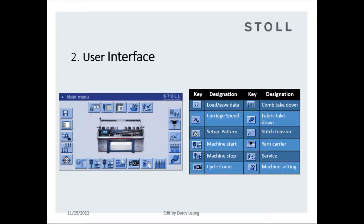Stitch tension: adjust the stitch length on machine. Yarn carrier: manages yarn carriage adjustment, such as stop position and feeder speed. Service: for technicians maintaining the machine. Machine setting: a settings platform which collects some function keys.